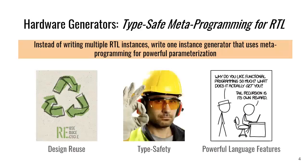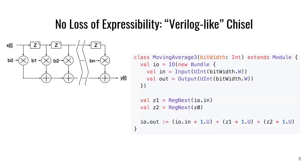Tail recursion is its own reward — we should all know that. For those new to Chisel, the original design goal was to write our designs without any loss of expressibility. That means we want to be able to write Verilog-like Chisel so we can control every mux in the design and every bit width if we wanted to — not that we have to, but if we wanted to, we can do those types of optimizations.